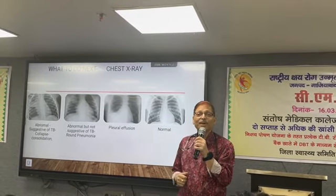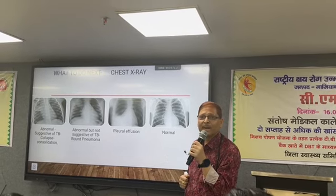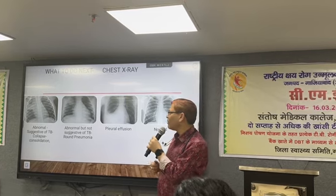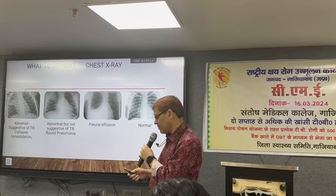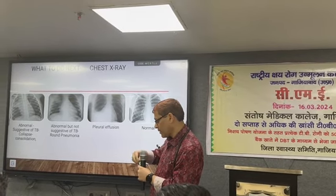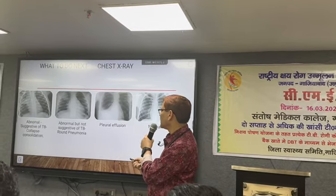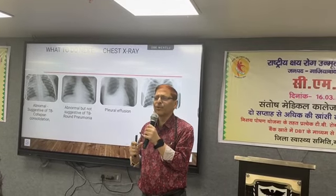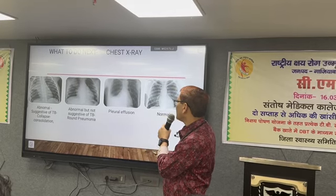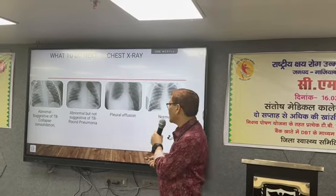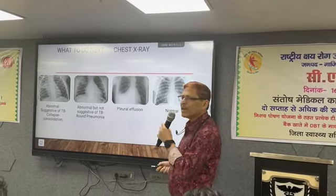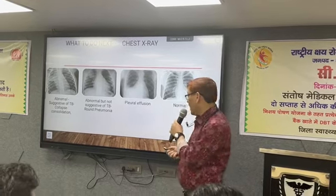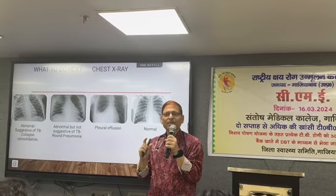The next step is to do a chest X-ray. The X-ray may show findings suggestive of tuberculosis such as collapse consolidation, cavitary lesion, or mediastinal lymphadenopathy. There may also be a shadow that is not suggestive of TB — for example, a round shadow which could be round pneumonia or a staphylococcal lesion. The X-ray may also show pleural effusion, or it may be entirely normal.